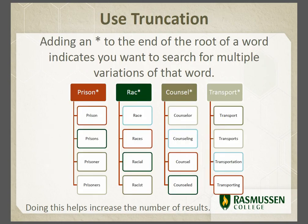Add an asterisk to the end of a root word to show you want to search for multiple variations of that word. For example, searching for prison* will bring back results that include the words prison, prisons, prisoner, or prisoners. The same can be seen for the root words race, council, and transport.